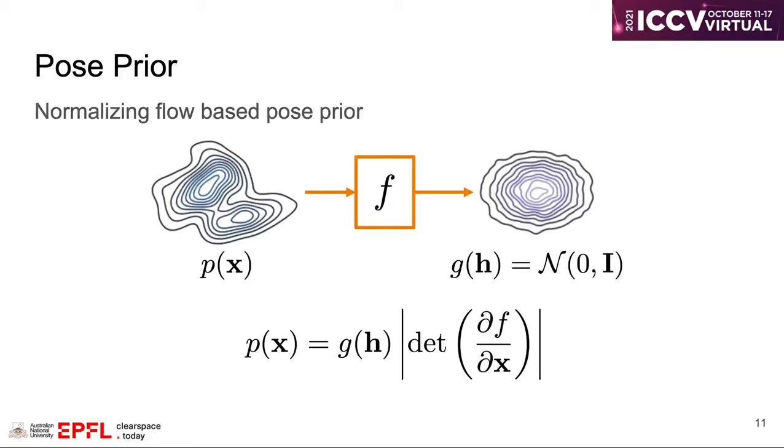One of the advantages of normalizing flow is the exact computation of likelihood. Thus, given the transformation function f, the likelihood of a data point x can then be explicitly computed.